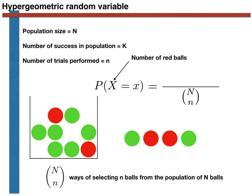What needs to appear in the numerator is the number of ways of choosing exactly k red balls amongst the capital N choose n different choices for the selected balls. We need to work out how many different ways we could have chosen exactly x red balls from the K red balls in the cup, and the number of ways we could have chosen n minus x green balls from the capital N minus K green balls in the cup. These two quantities are given by binomial coefficients, and the total number of ways of selecting x red balls and small n minus x green balls is given by their product. The final probability mass function for the hypergeometric random variable is thus given by this quotient shown here.